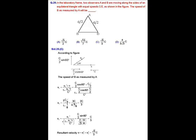So, the resultant velocity of B as measured by A is square root of ux square plus uy square that is equal to square root of 5 into C divided by 3. Option C is correct.